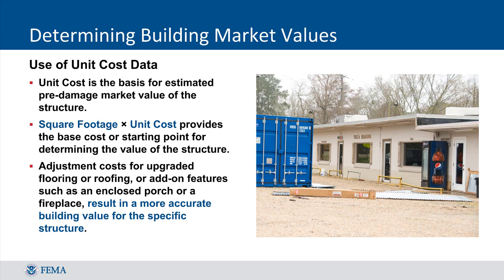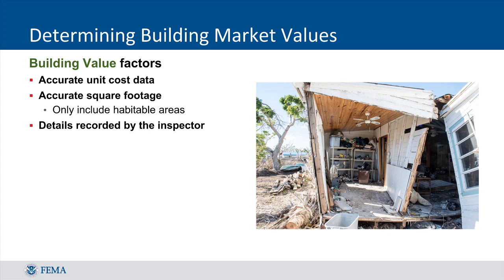The square footage multiplied by the unit cost provides the base cost or starting point for determining the value of the structure. Adjustment costs may be used for the unit cost data, resulting in a more accurate building value for that specific building. Unit cost data should be as accurate as possible. The square footage should only include habitable areas, and the more detail recorded by the inspector will also make the unit cost data more accurate.